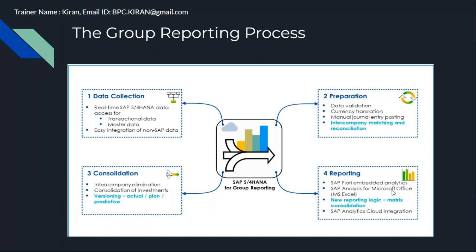Reporting also includes consolidated cash flow, consolidated changes in equity — because subsidiaries may add new shares or have current income added — and other equity changes. Comprehensive income covers different sources of income beyond main sales, such as interest from investments. So consolidated comprehensive income report, cash flow report, and changes in equity are all part of group reporting.